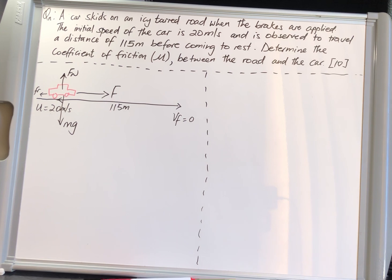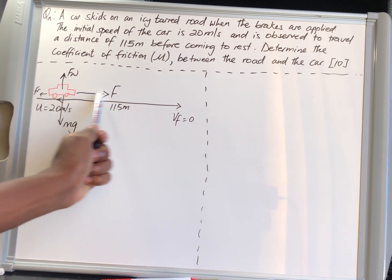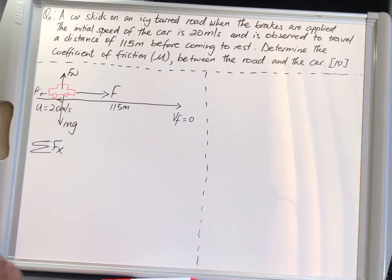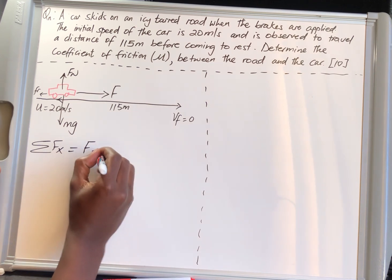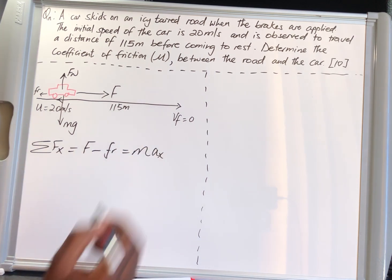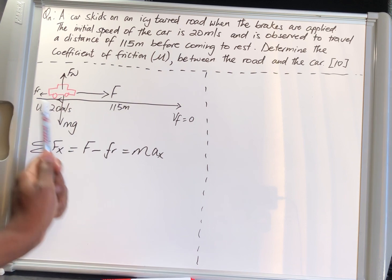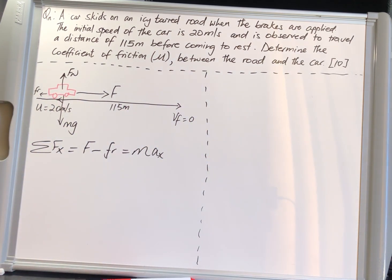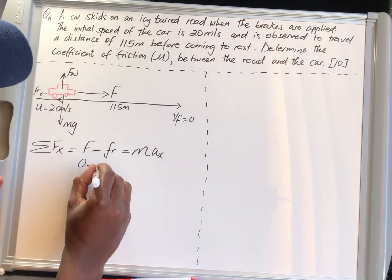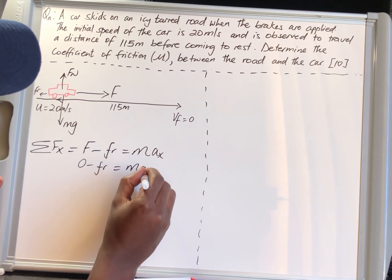To determine the coefficient of friction between the road and the car, we need the summation of all forces in x, since the car is moving along the x-axis. Summation of forces in x equals F minus frictional force, and this gives us m times ax, where ax is the acceleration in the horizontal axis. Since the brakes are applied, F is zero, so we have: zero minus frictional force equals m·ax.